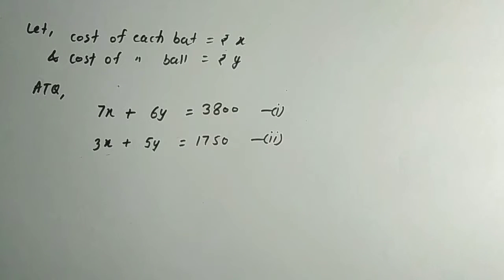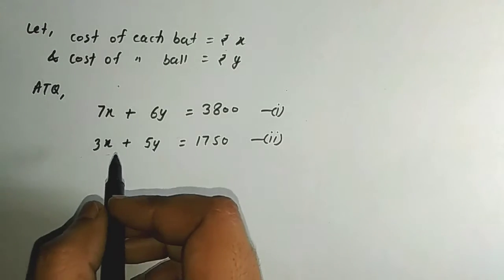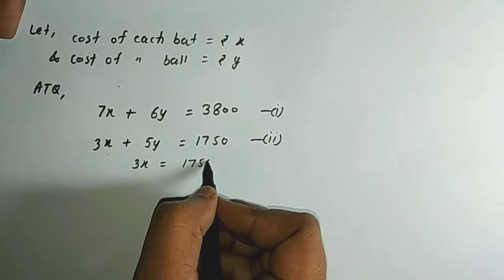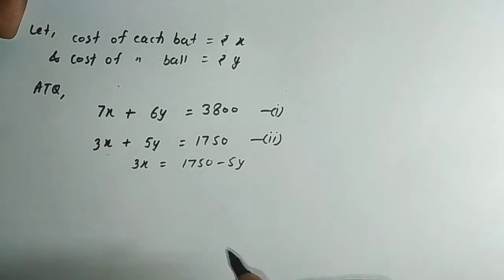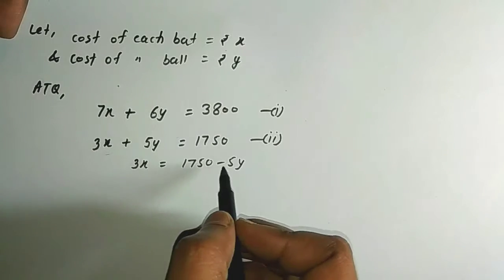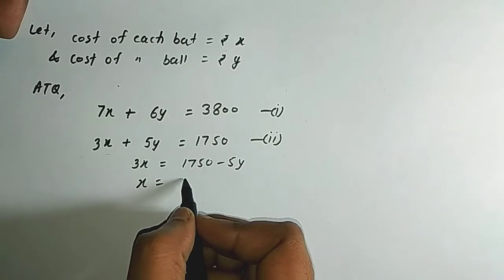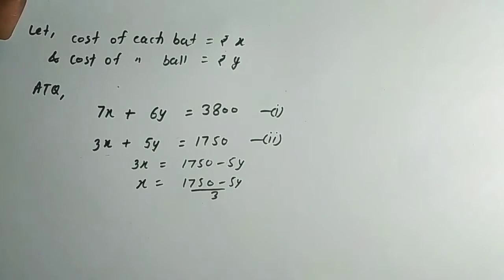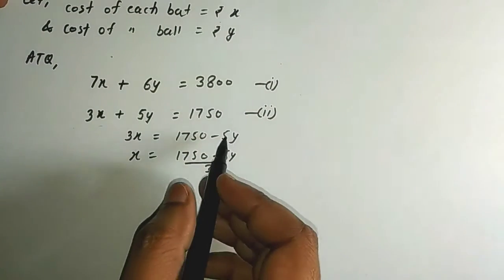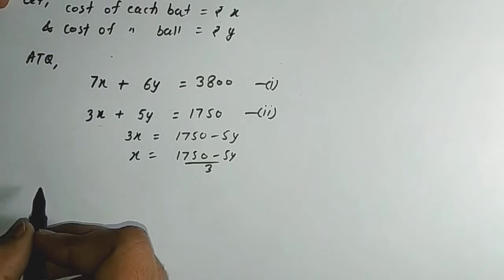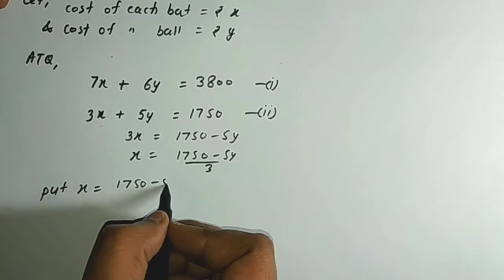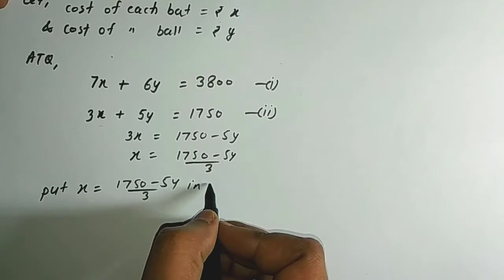So the second equation is: 3x + 5y = 1750. Now I will find the value of x from one equation and substitute it into the other equation. From the second equation: 3x = 1750 − 5y, so x = (1750 − 5y) / 3.